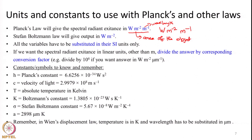When we apply Stefan-Boltzmann law by integrating Planck's law with respect to wavelength from 0 to infinity, the wavelength unit cancels out and we obtain units of watt per meter squared — total power emitted per unit area. All variables substituted into these equations must be in SI units: wavelength in meters, temperature in Kelvin, and so on.